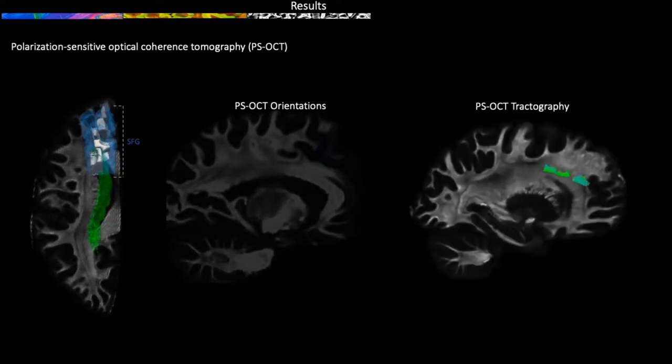When we focus on the anterior-posterior orientations where the SLF is supposed to be, we see coherent fibers reaching more anterior portions of the superior frontal gyrus, aligned with the diffusion-based multi-resolution tractography results.